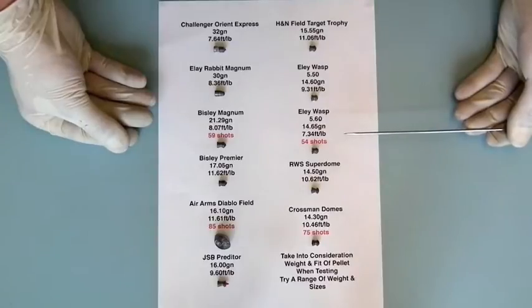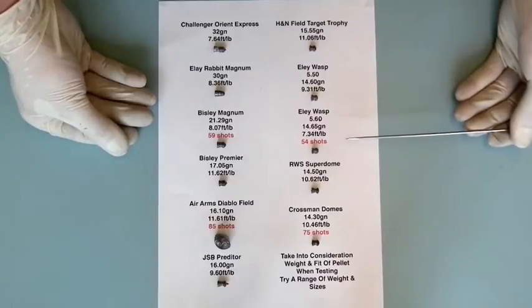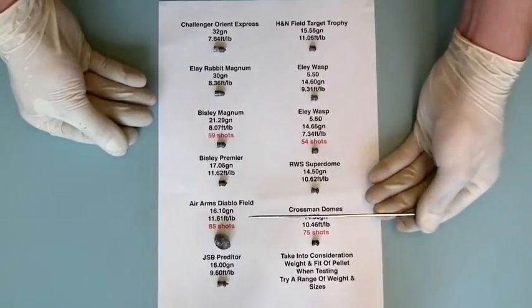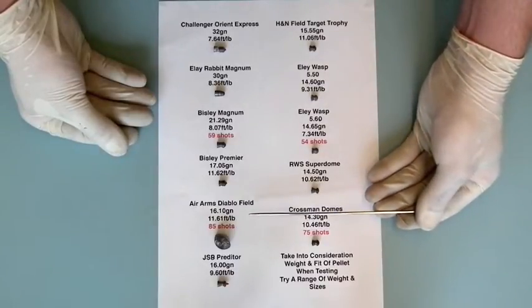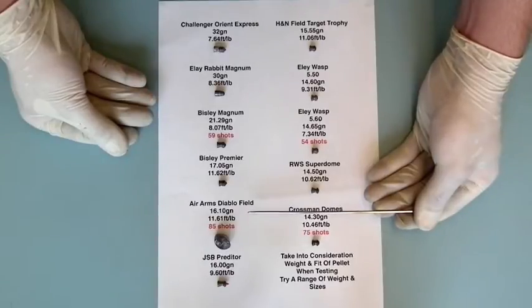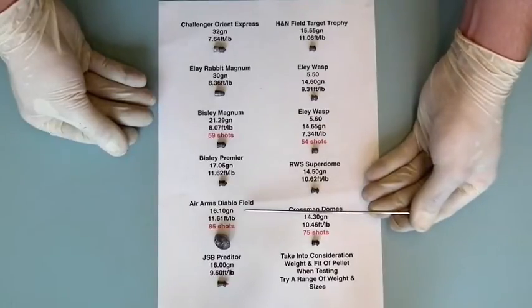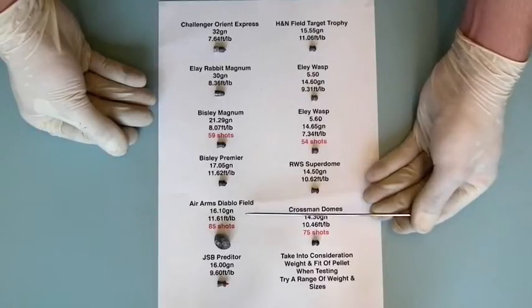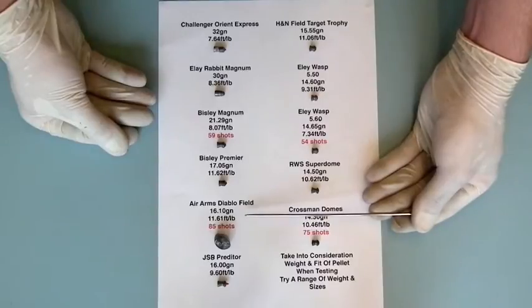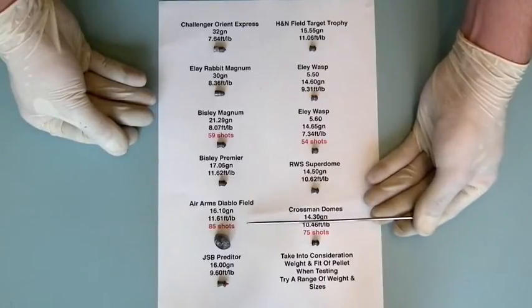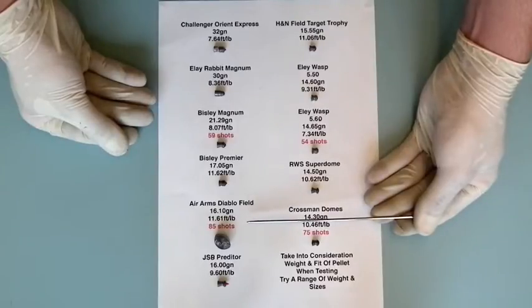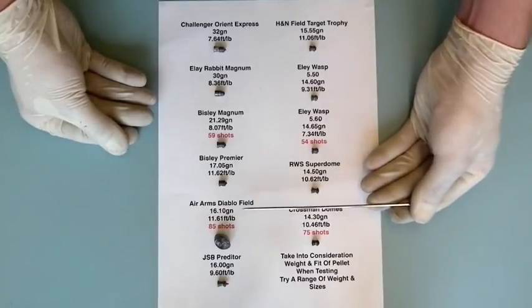Here are some simple tests that I did recently. The air rifle used has got one of our regulators fitted and it was set up to use the Air Arms Diablo Field, which I've got down as being about 16.1 grains. With these, we'd set it up to be about 11.6 foot-pounds, and with this we're getting roughly about 85 shots, although the regulator kicked out at probably the high 70s, but then you get a very slow drop off. So we'll use that as the control.